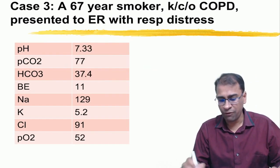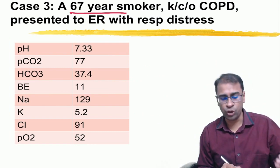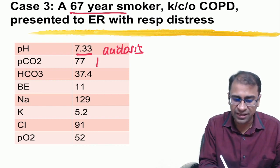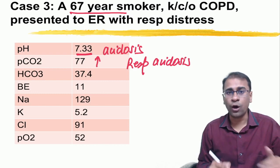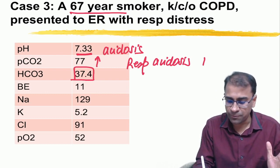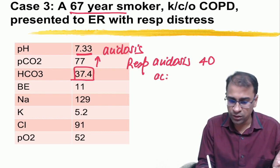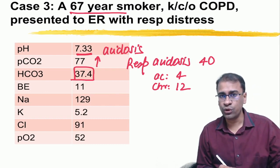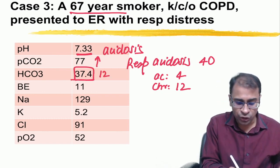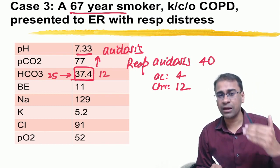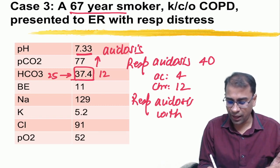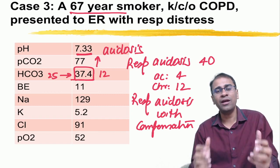Case 3: A COPD patient with pH 7.33 — acidosis. PCO2 is increased, so this is respiratory acidosis. The PCO2 has risen by approximately 40. For a chronic case, we expect a bicarb increase of 12. The bicarb is 37.4 — starting from a normal of 25, it has increased by about 12. This matches the expected compensation, so we define this as respiratory acidosis with full compensation.